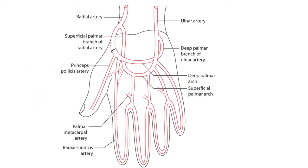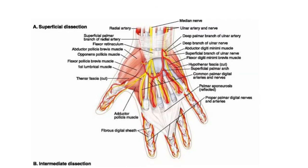Moving on to the location of the superficial palmar arch. This superficial palmar arch is seen along the palmar aspect of the hand, where it lies immediately deep to the palmar aponeurosis. As we can see here, the reflected part of the palmar aponeurosis — once it is reflected, what we see is the U-shaped arterial arch, which is nothing but the superficial palmar arch.